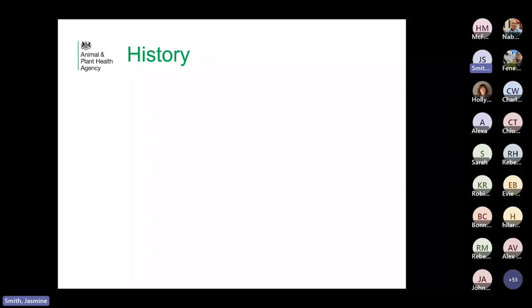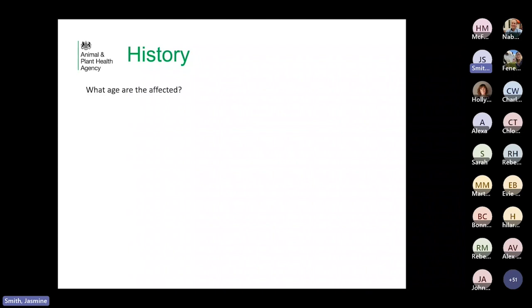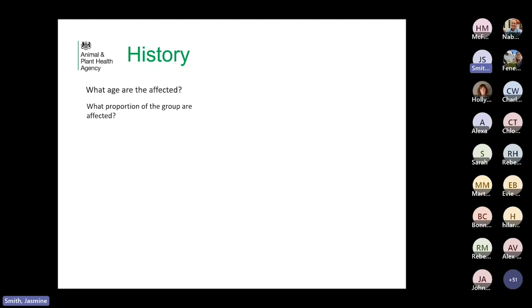The first thing to ask is what age is affected — this narrows things down considerably in terms of which parasites or clostridial diseases might be involved. Lamb dysentery is a possibility in younger lambs. What proportion of the group are affected? If there are lots of mucky bums, PGE might be an issue. Pulpy kidney can affect up to about 10% of the group, whereas lamb dysentery can affect around 30%. If it's CCN, you'd only expect to see a couple of cases typically.